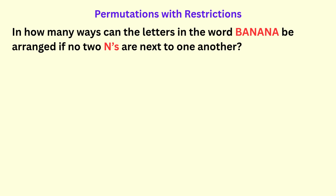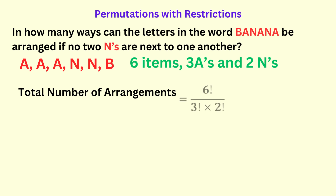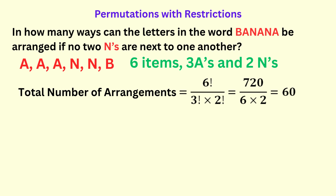Let's look at another problem. How many ways can the letters in the word BANANA be arranged if no two N's are next to each other? There are six letters in BANANA — three A's, two N's, and one B. If there were no restrictions, the total number of distinct arrangements would be six factorial divided by three factorial for the three A's and by two factorial for the two N's. That's 720 over 12, which is sixty.